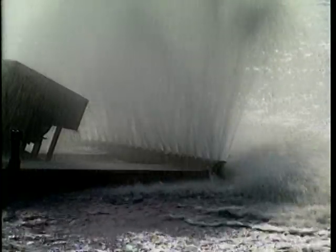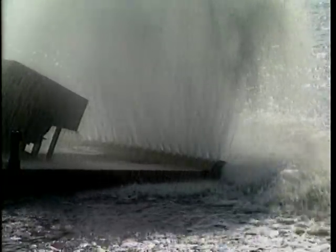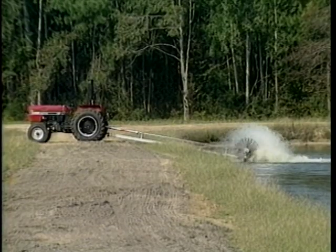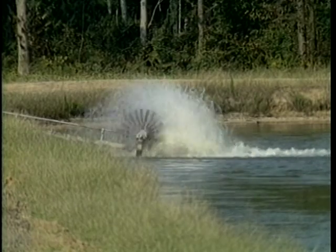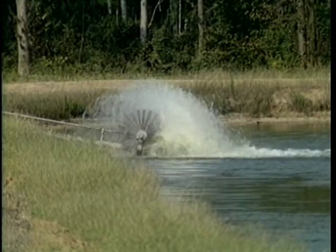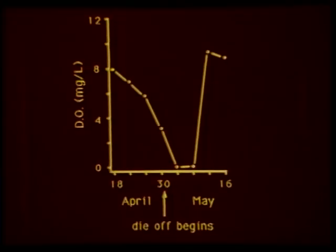Diffusion may increase or decrease dissolved oxygen concentrations depending on the saturation level of the pond. Wave action caused by wind exposes more water to the air, increasing the rate of diffusion. Corrective measures for low dissolved oxygen are based on this principle. For example, aeration devices are used to expose water to the air, thereby increasing diffusion of oxygen into the water. Sudden die-offs of phytoplankton may occur at times. When a die-off occurs, dead algae may form near the surface. As plankton dies, photosynthesis ceases and respiration increases due to microbial decomposition, and as a result dissolved oxygen concentrations fall dramatically. As shown in this graph, dissolved oxygen concentrations suddenly dropped immediately after the die-off of plankton and remain low for several days because of increased respiration and decreased photosynthesis.